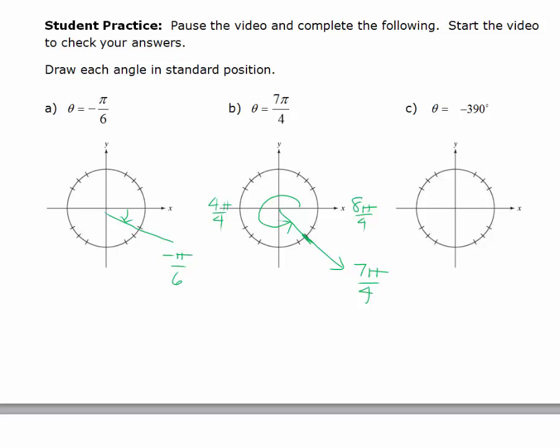Let's do part C. We want to draw negative 390 degrees. We know that's going to be a clockwise rotation. We know that if we do one full rotation clockwise, that would be negative 360 degrees. So I need to go 30 degrees more to bring me right here. So when you have negative 390 degrees, you have one full rotation in a negative direction, and then another 30 degrees.